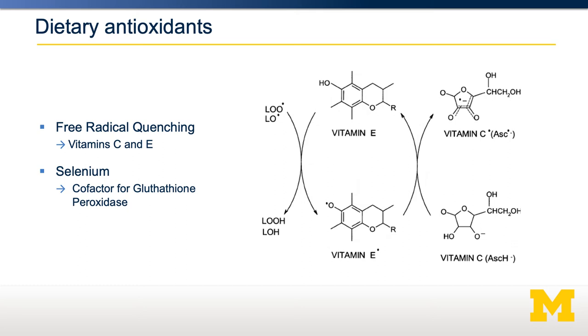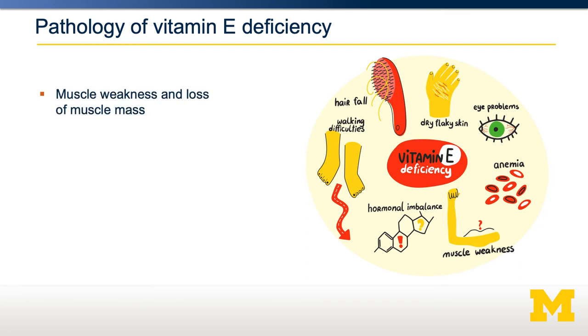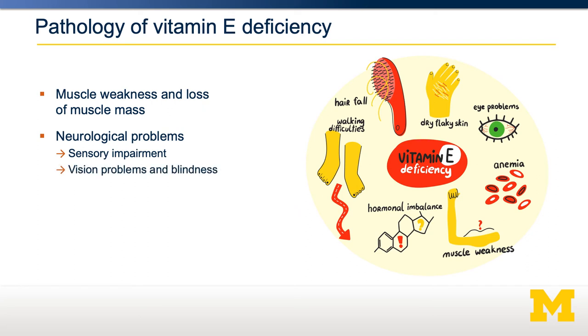Diets deficient in vitamin C or vitamin E can often result in excessive oxidant damage. Some of the phenotypes of vitamin E deficiency are muscle weakness and loss of muscle mass, neurological problems including sensory and vision problems, and hemolytic anemia due to the death of red blood cells. Pause the video and think for yourself: why might these pathologies be associated with increased oxidant stress?